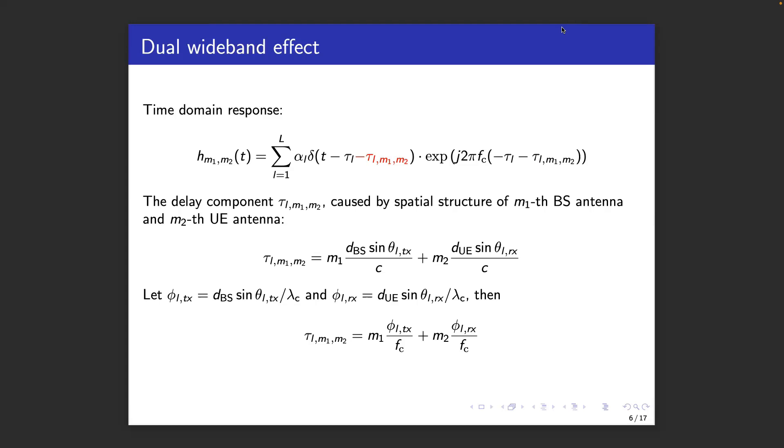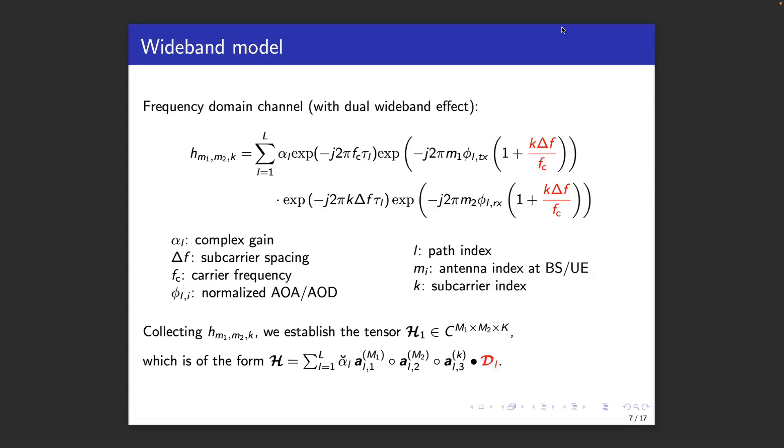With these new notations, we can now express the channel in the frequency domain between transmit antenna M1 and receive antenna M2, where now the red terms have been added. We see that effectively the array steering vectors have become frequency dependent, which is the wideband effect of interest.